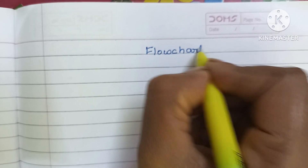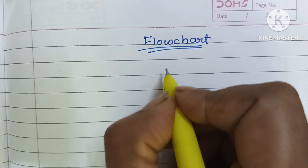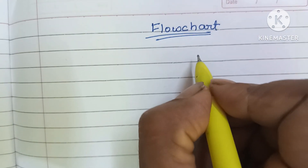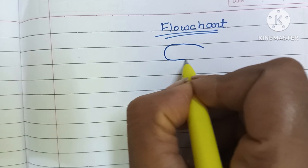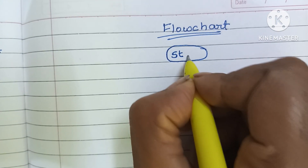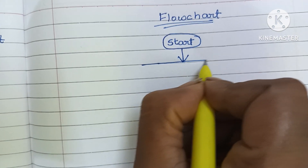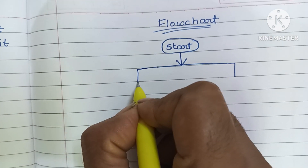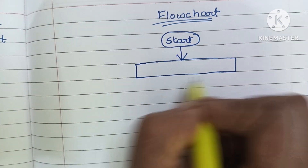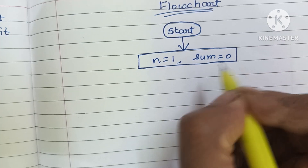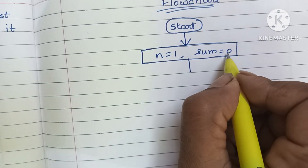Next we are going to draw a flowchart. A flowchart is a graphical representation of a solved problem. We use different geometrical shapes — oval, parallelogram, rectangular, and diamond shapes. A flowchart always starts with a start statement written within an oval shape. Next we declare the values of n and sum within a rectangular shape: n = 1 and sum = 0.